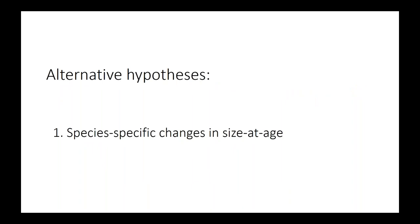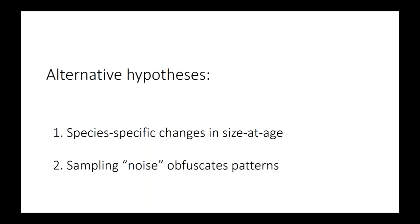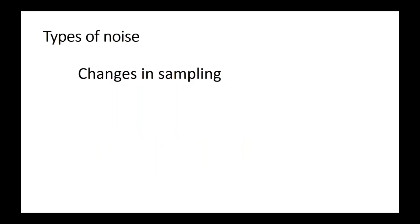When I started working on growth, we hypothesized that if changes were environmentally driven, we might see a synchronized response in growth rates or fish size across different species within an ecosystem. This might let us say more confidently that changes were environmentally driven rather than driven by one of the other factors. There are two key types of sampling noise I'll discuss today: changes in sampling over time and space, and spatial variation.